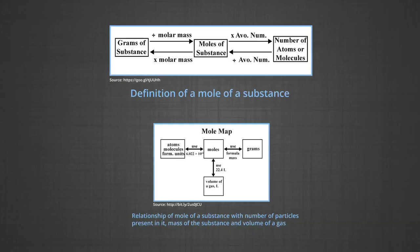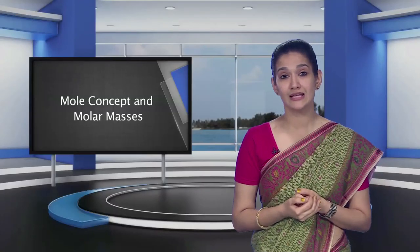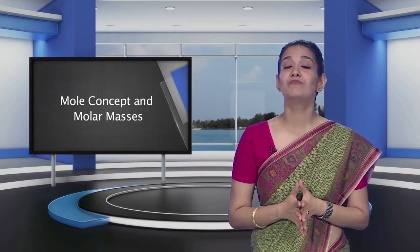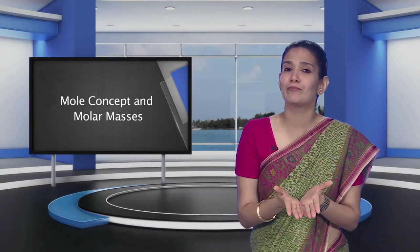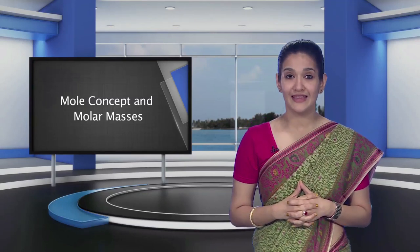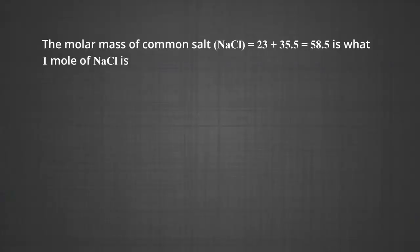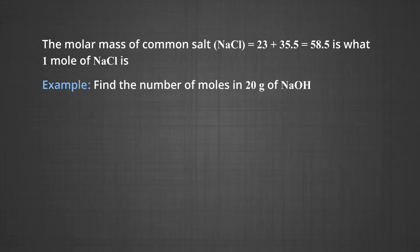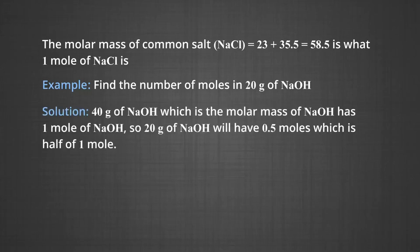If you weigh 58.5 g of NaCl (common salt), you happen to weigh one mole of common salt, since its molar mass is 23 + 35.5 = 58.5u. For example, to find the number of moles in 20 grams of NaOH: since 40 grams of NaOH (the molar mass) contains 1 mole, 20 grams of NaOH will have 0.5 moles.